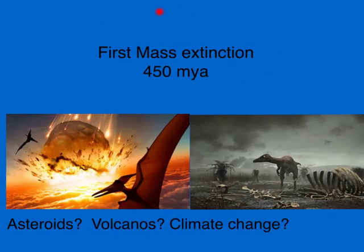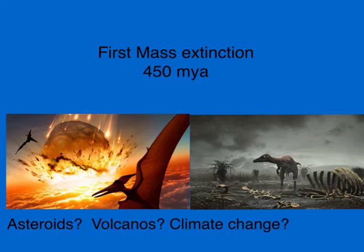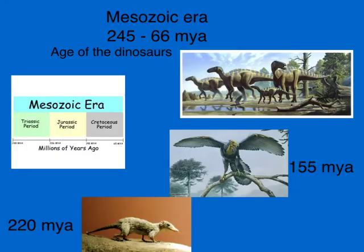At the end of this era was the first mass extinction, 450 million years ago. The mass extinctions might have been caused by asteroids, or by volcanoes creating clouds of dust and blocking heat from the sun, or by climate change — probably a combination of all these things. After the mass extinction, not all life was annihilated; maybe 99% was, but some survived and evolved into other creatures.